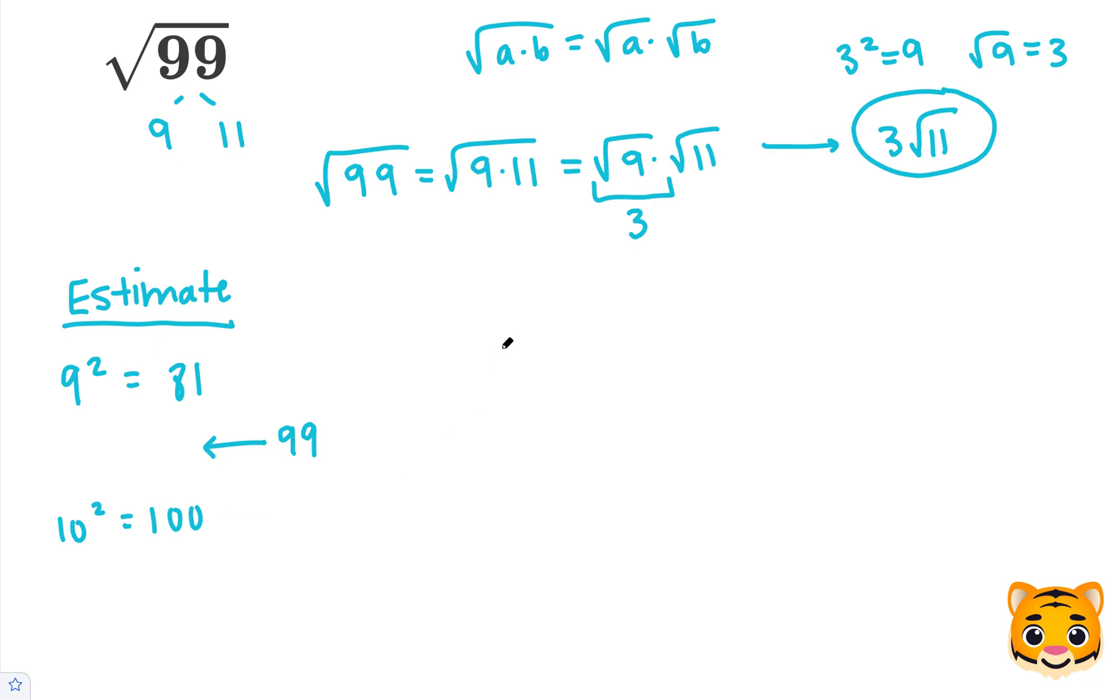Using this information, we can write the following inequality. 81 is less than 99, which is less than 100. Now we can add a square root to all of these values, and then we can see that the square root of 81 is 9, since 9 squared is 81, and the square root of 100 is 10, because 10 squared is 100.